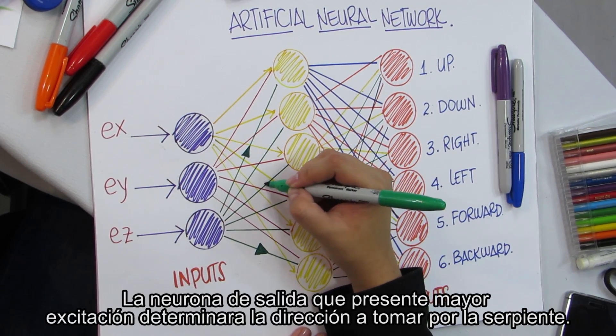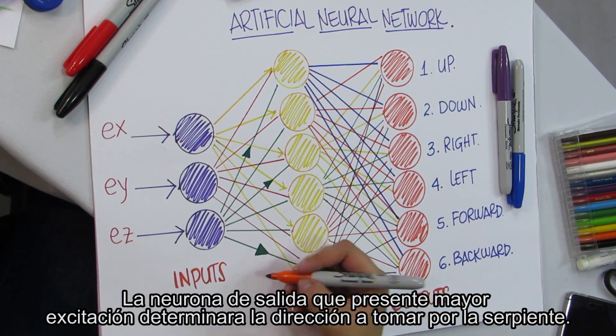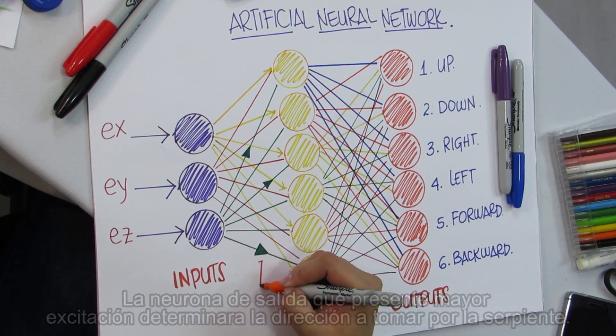The output neuron which presents the highest excitation will determine the direction to be taken by the snake.